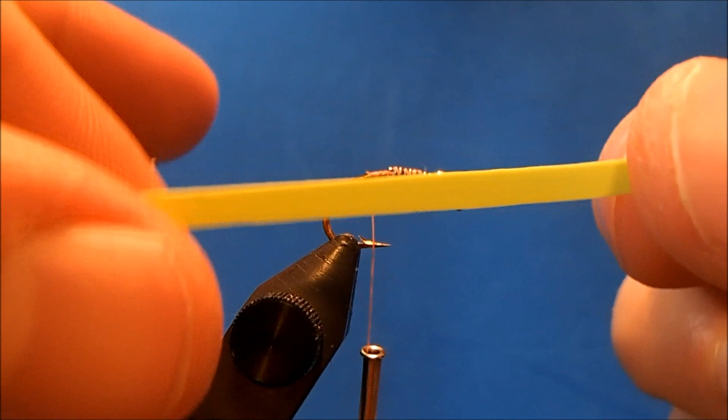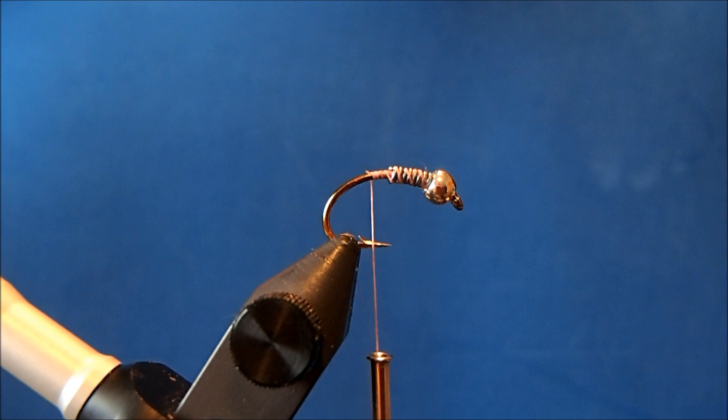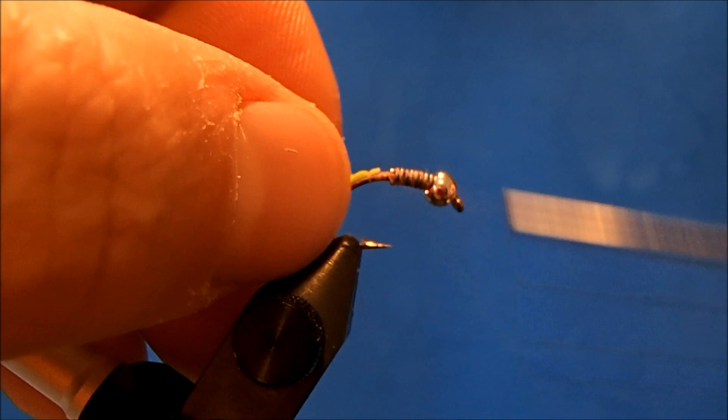So the first color that I'm going to take is going to be the back and this is in a chartreuse or light green and I'll cut a V into it so that I've got a place to tie it in.